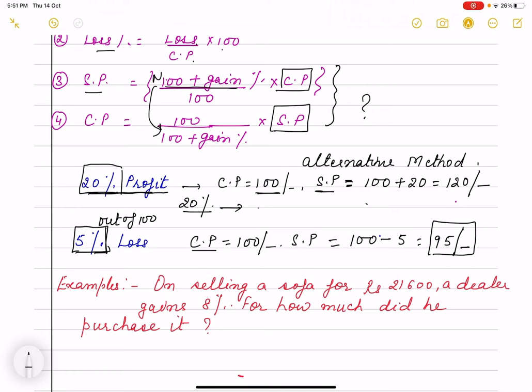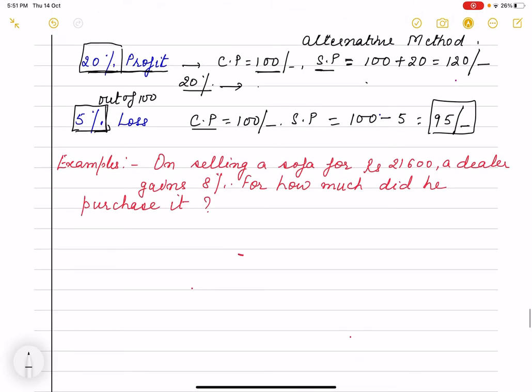I hope it is clear to you that what does it mean that if I have 20 percent profit then what is the selling price or if we have a loss. Same way if I have 8 percent profit that means if my CP is 100 then my SP is 108 rupees, that means 100 plus 8.